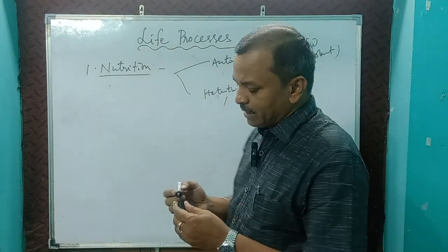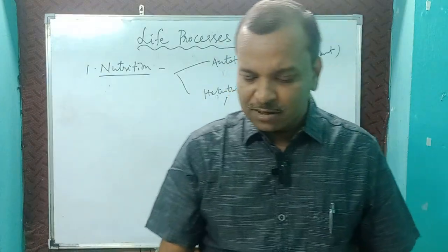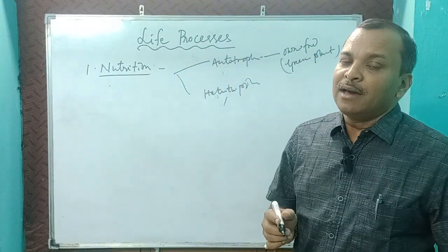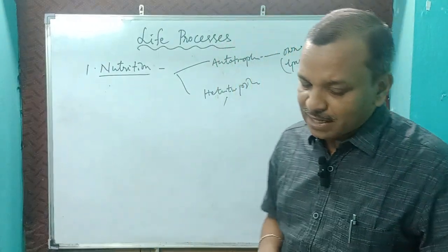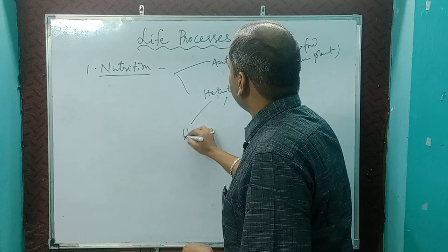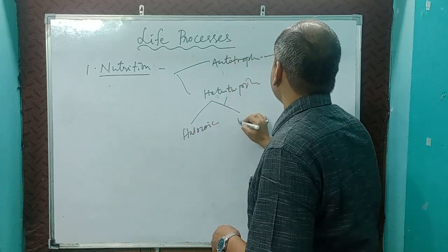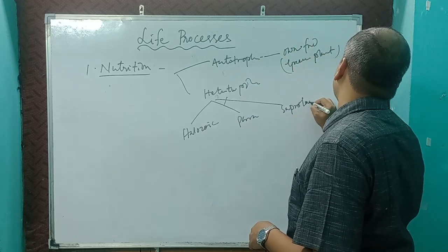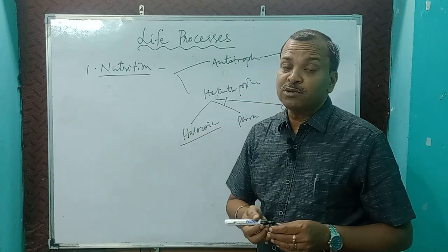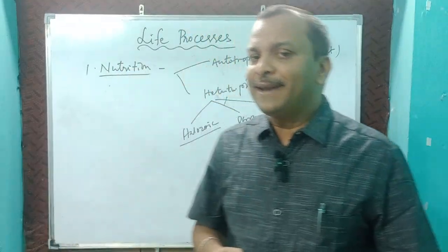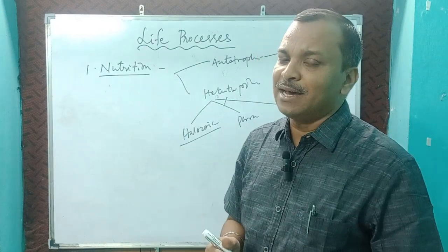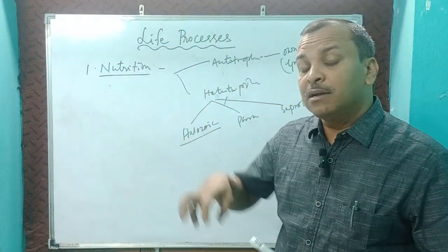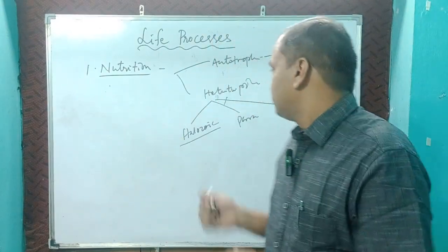Heterotrophic — those who can't prepare their own food are called heterotrophic. Heterotrophic is again divided into three groups: halozoic, parasitic, and saprophytic. Those who are halozoic take solid food intake — like us, human beings come under halozoic.